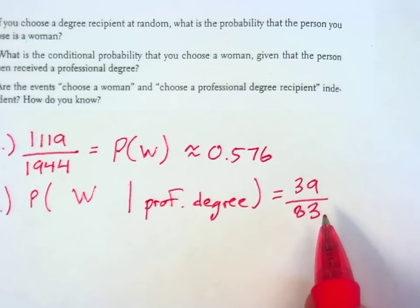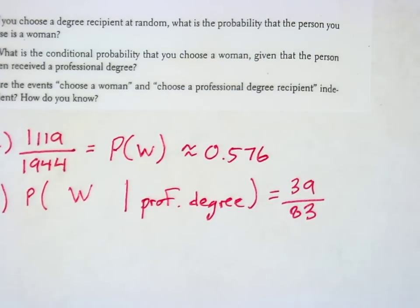So as a decimal, that looks like it's about 0.576. And here as a decimal, the 39 out of the 83, so that's 0.470.